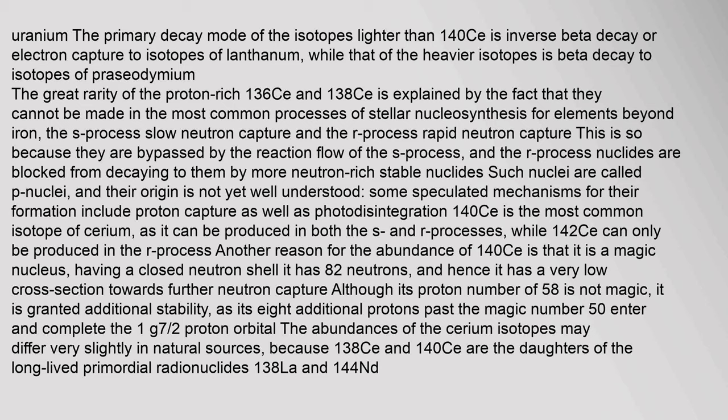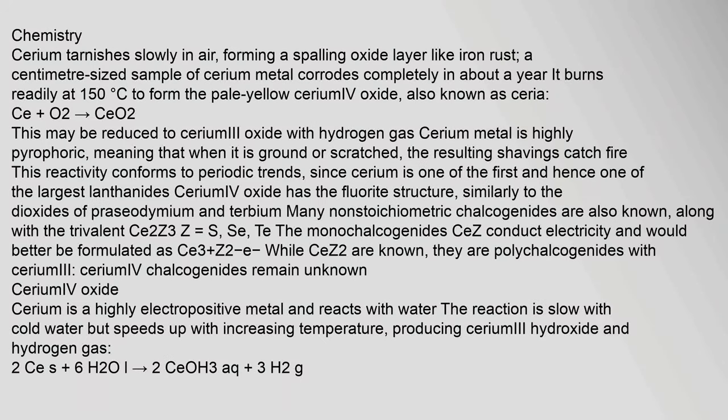Another reason for the abundance of 140Ce is that it is a magic nucleus, having a closed neutron shell with 82 neutrons, and hence it has a very low cross section towards further neutron capture. Although its proton number of 58 is not magic, it is granted additional stability as its 8 additional protons past the magic number 50 complete a subshell. Cerium tarnishes slowly in air, forming a spalling oxide layer like iron rust; a centimeter-sized sample of cerium metal corrodes completely in about a year. It burns readily at 150°C.